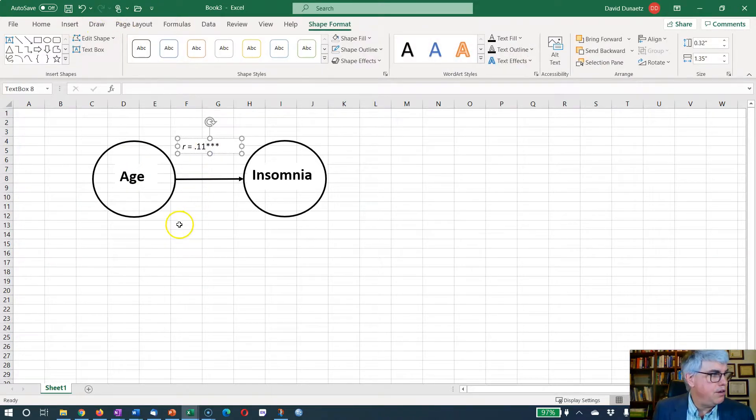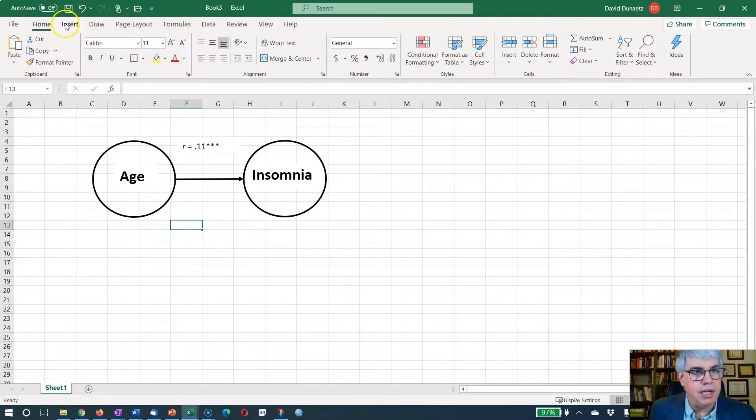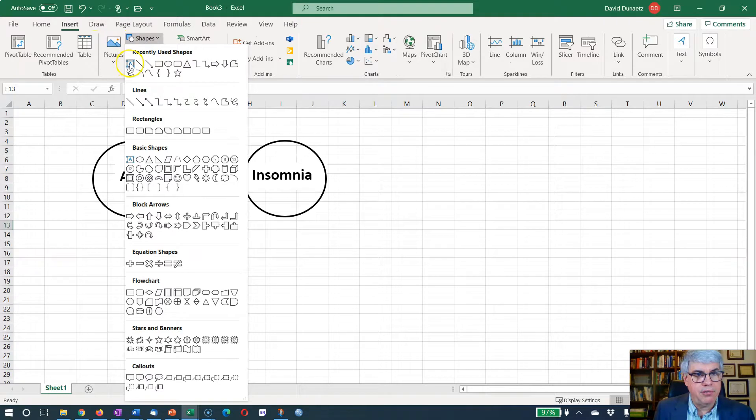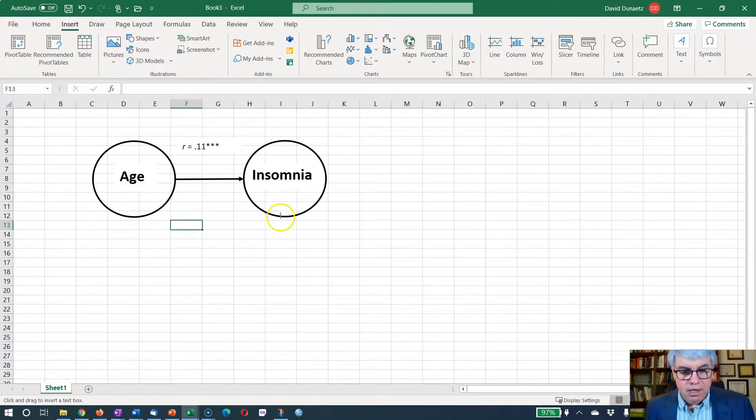Now it's covering up my circle. So if I right click on this I can send it back. I'll send it behind the circle. Send it back makes it the bottom layer so the circle's on top of it.